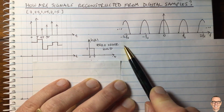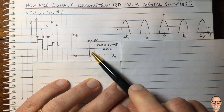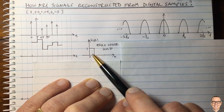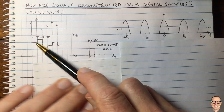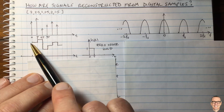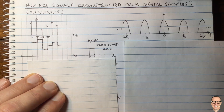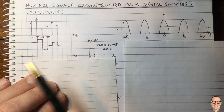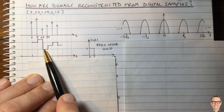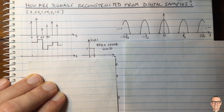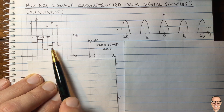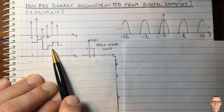In every DAC — digital-to-analog converter — there will be a filter, and this zero-order hold is the most basic one. We can clearly see this output signal does not look like the original sampled waveform. There are obviously quantization-like staircase elements, so this is not going to be a fantastic reconstruction filter.